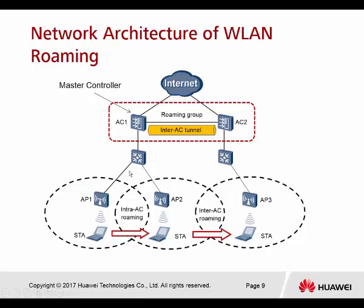Intra-AC Roaming applies regardless of whether it is layer two or layer three. When the PC continues Roaming from AP number two into the BSA of AP number three, this is called inter-AC Roaming, because these two APs are managed by different controllers — controller number one and controller number two.